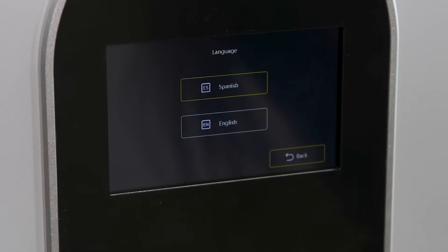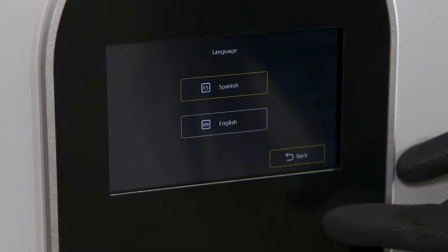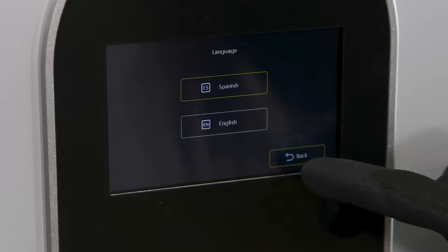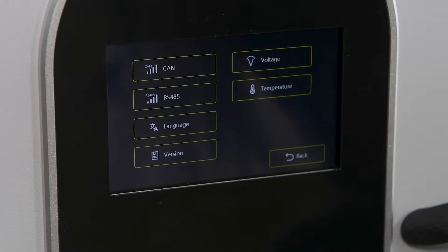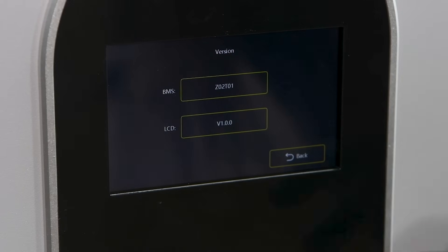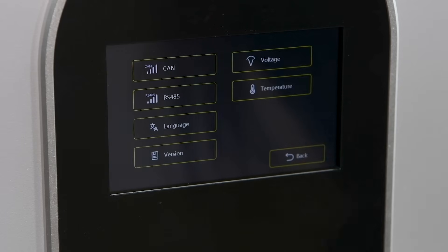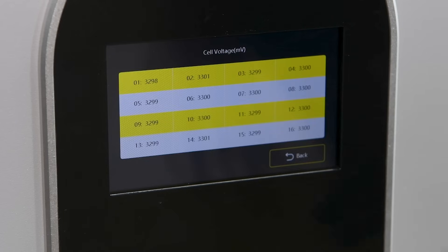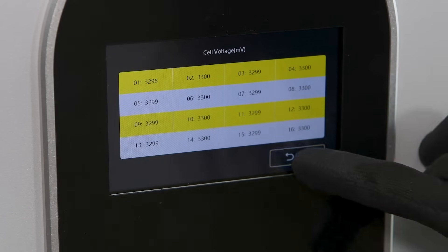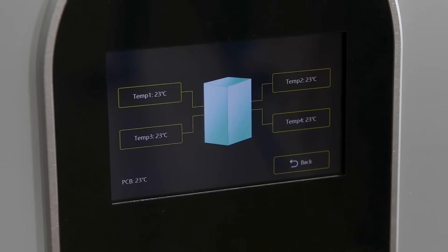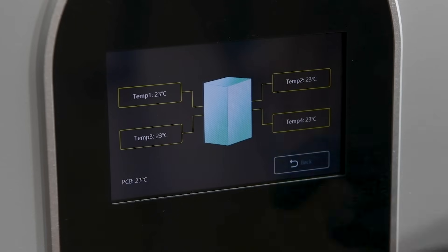We also have language that we could select. We have English or Spanish on this one. We're going to use English for today, but Spanish is a good option there. We can see the version of the BMS that we have and the LCD screen for our firmware versions. So if we go into voltage, we can see what voltage that each cell is operating. And if we go into the temperature, we can see the temperature for the four sensors.